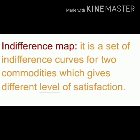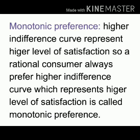For example, if you have four indifference curves: IC2 will give more satisfaction than IC1; IC3 gives more satisfaction than IC2; IC4 gives more satisfaction than IC3. The higher indifference curves give more satisfaction. This is what we call monotonic preference — a higher indifference curve gives a higher level of satisfaction than a lower one.